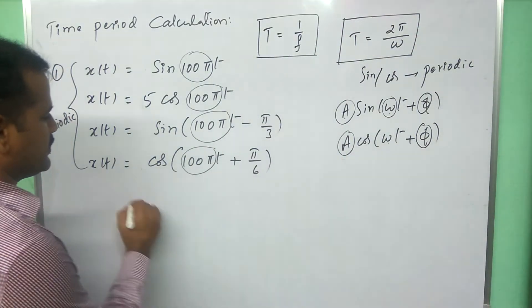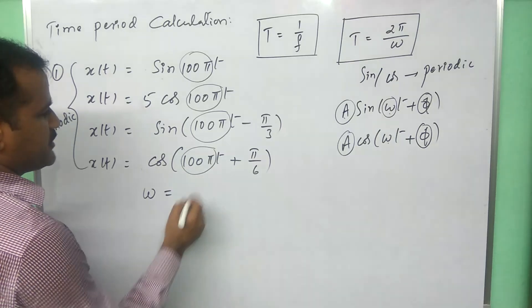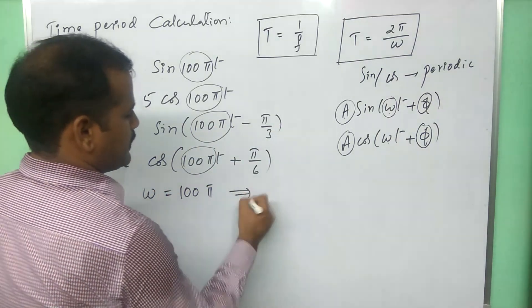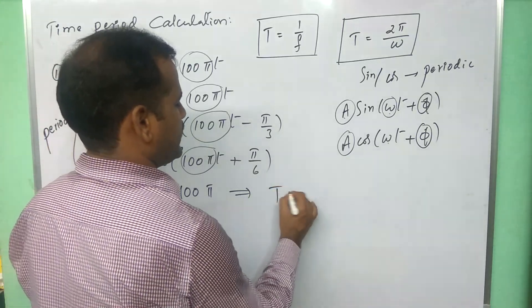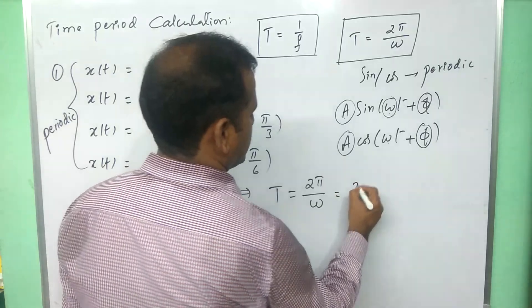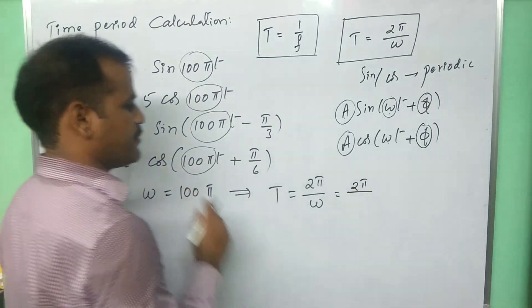Let us calculate the time period of this signal. So, after comparing with the standard form, we are getting omega is equal to 100 pi. That implies the time period is equal to 2 pi by omega or 2 pi by 100 pi.